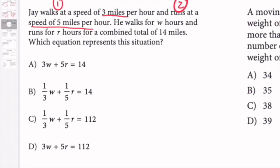He walks for W hours and runs for R hours. So it's the same unit, so I don't need to change anything. For a combined total of 14 miles, which equation represents the situation?